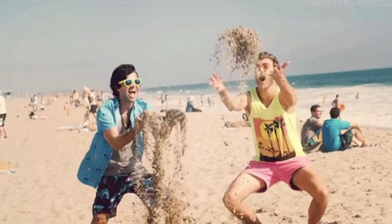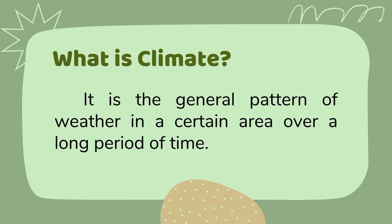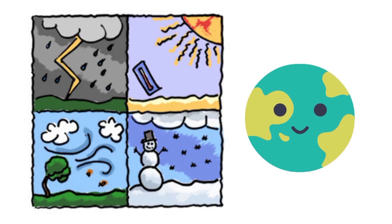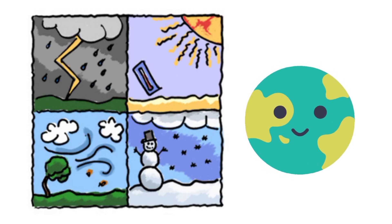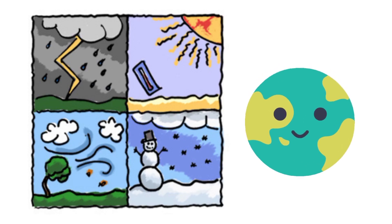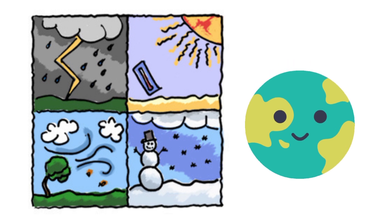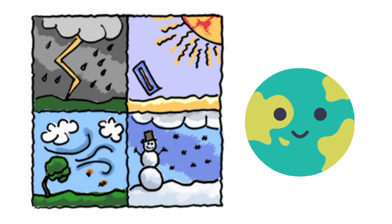So what is climate? It is the general pattern of weather in a certain period of time. To tell the climate of a certain area, scientists study its precipitation and temperature for a period of 30 years.